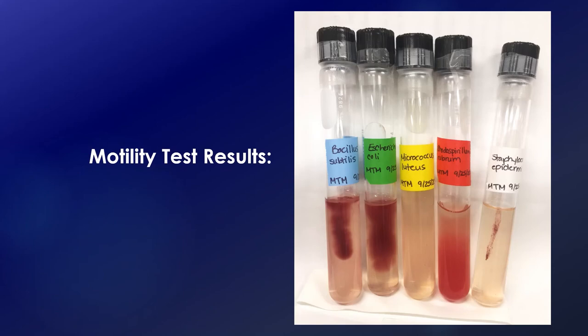Here are the results of the motility test for all five organisms: Bacillus, E. coli, Micrococcus, Rhodospirillum, and Staphylococcus. Micrococcus and Staphylococcus are not motile — you can see the stab mark for Staphylococcus but they haven't moved away from the original stab point. Rhodospirillum on the other hand is really good at moving — it can corkscrew through the medium and the entire test tube is red. E. coli and Bacillus have also definitely moved away from the origin of the stab.